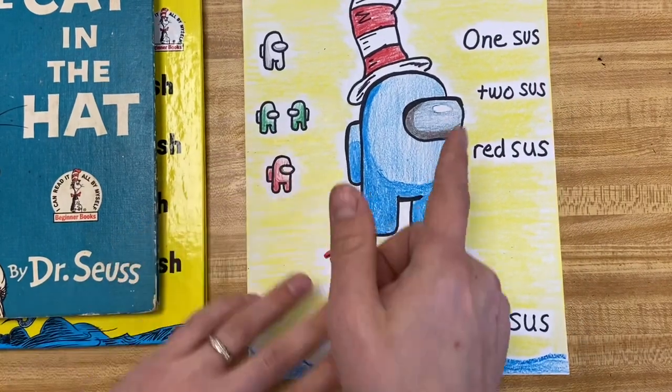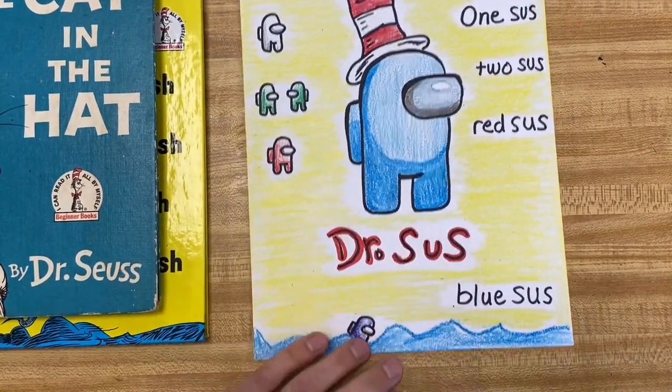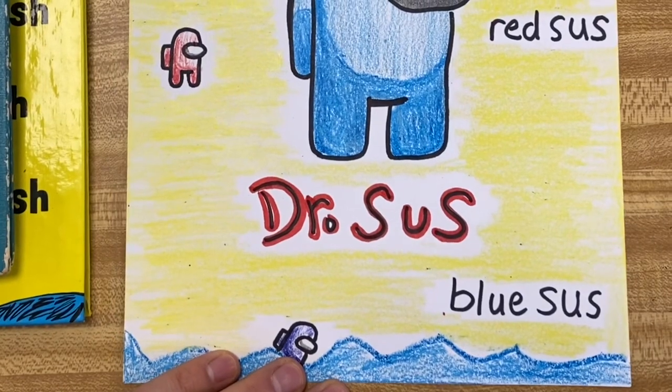There it is. Look at the hat. We got one sus, two sus, red sus, and blue sus all the way down there.